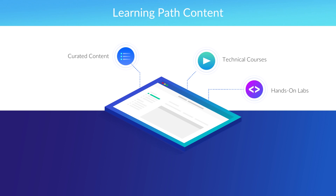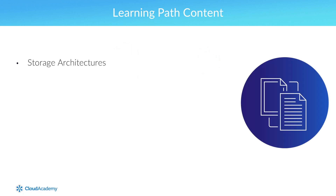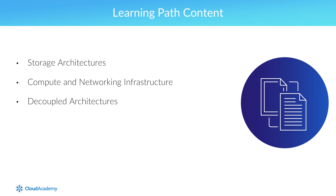The learning path has been created in such a way that for each domain covered, there is a number of technical courses and hands-on labs, which will provide you with all the information you need to become prepared to master each domain control point discussed. As you progress through the learning path, you will begin by looking at a number of courses and labs that relate to storage architectures across AWS and how they differ from each other and when to use them. This is then followed in a similar fashion with compute and networking infrastructure, looking at the compute services, network architecture and design and implementation. You will then be guided through content that relates to decoupled architectures and how they operate and the services included to help you implement them.